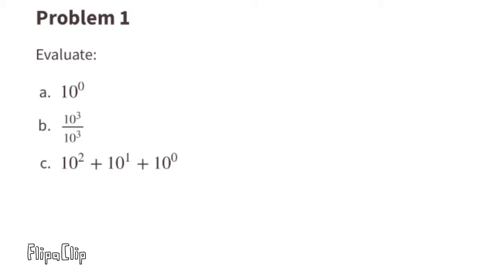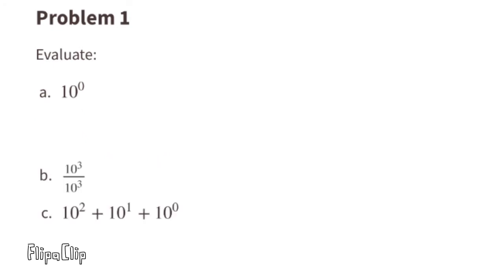Problem number 1. Evaluate. A: 10 to the power of 0. We know that any number to the power of 0 always equals 1. I made a tutorial explaining this, so if you want to know why, click the link in the description box or click the link in the above right-hand corner.